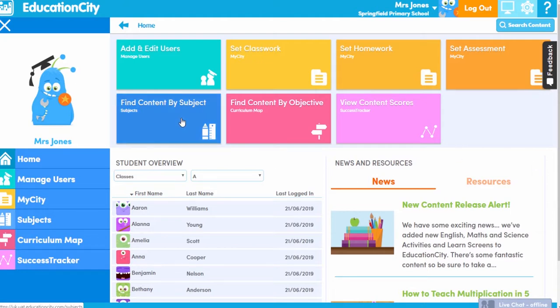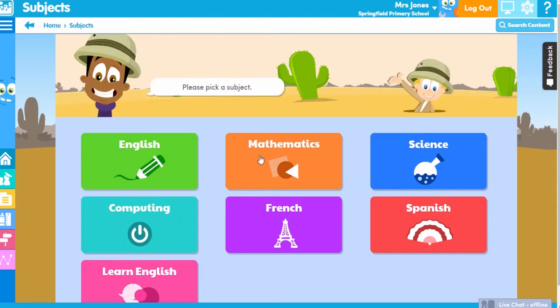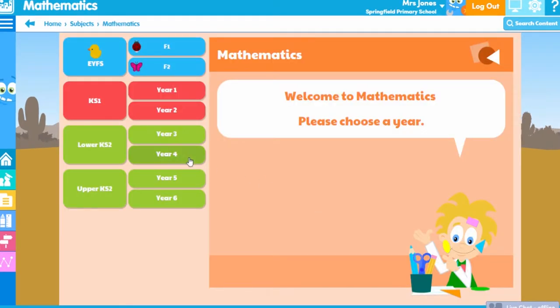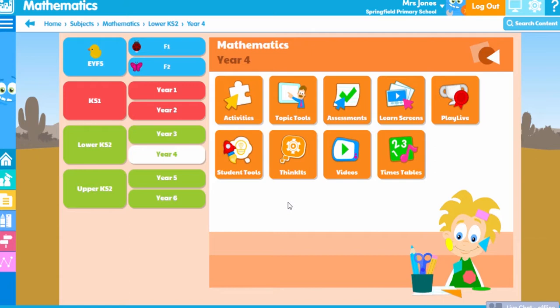To start let's choose a subject and select a year group. You'll see a range of content types as you can see here we're looking at the English curriculum but academic stages and years can be changed to suit different curriculums using our preferences settings.